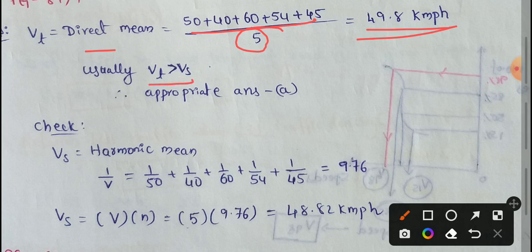We have Vt value greater than Vs. Vt means time-mean speed and Vs means space-mean speed.